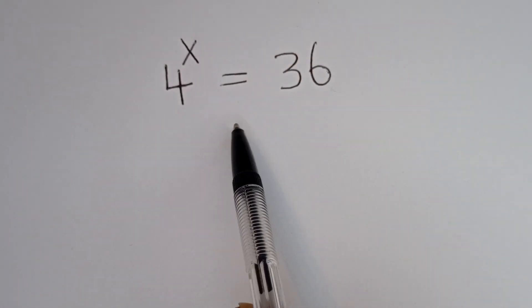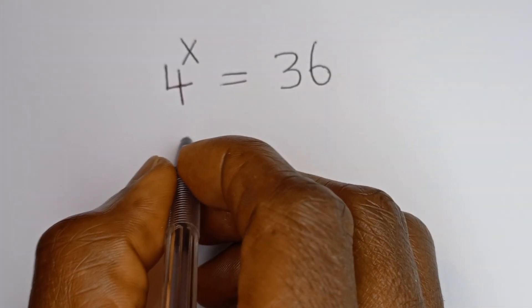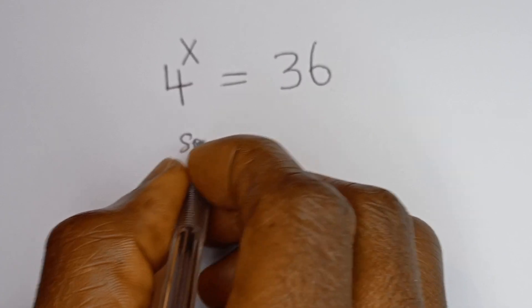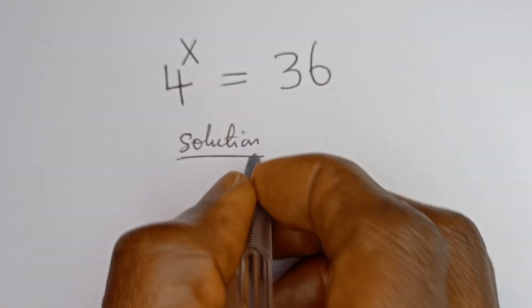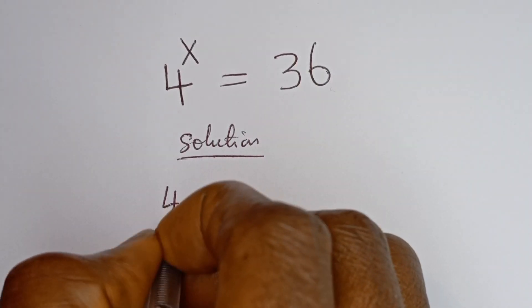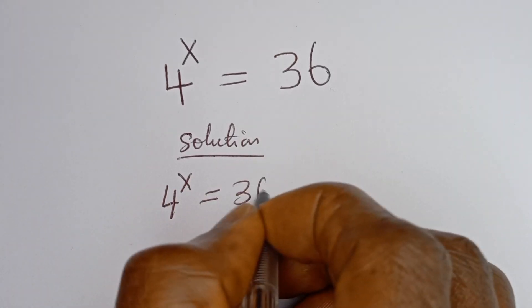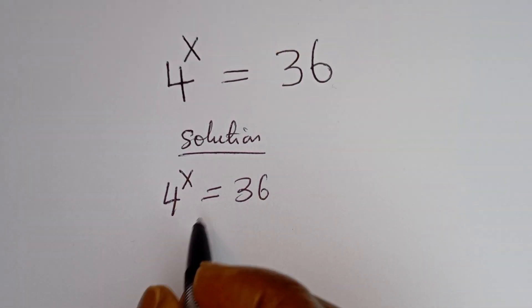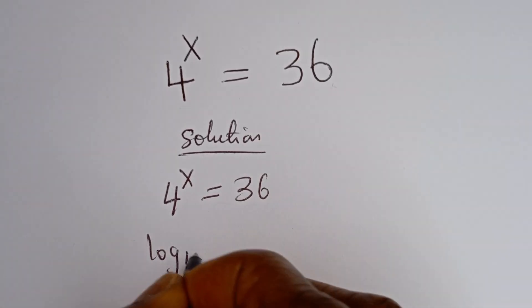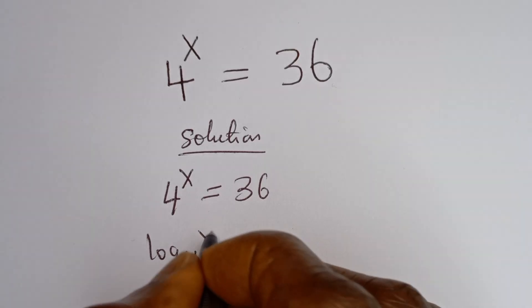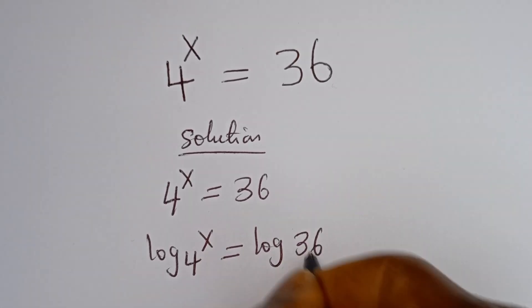Hello. How to solve for x in this problem: 4 to the power of x is equal to 36. Solution: we have 4 to the power of x is equal to 36. Let's take the log of both sides. We have log of 4 to the power of x is equal to log 36.